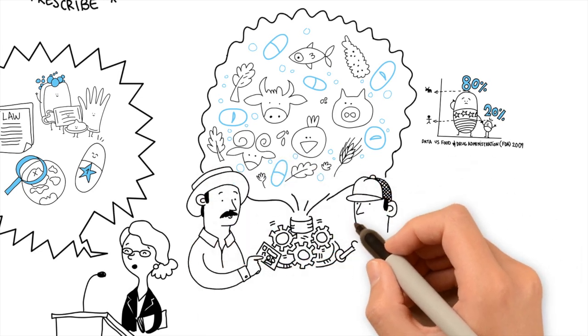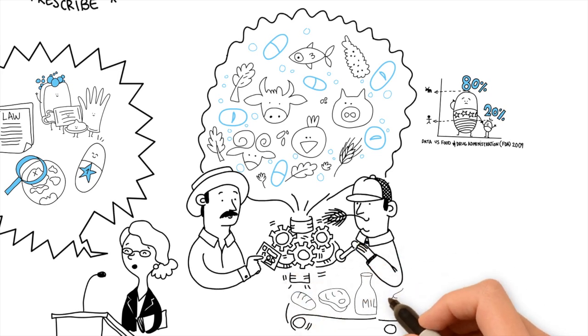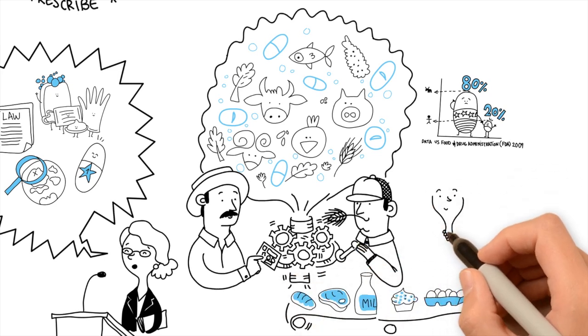In truth, urgent agricultural reforms are needed to curb practices that undermine the effectiveness of antimicrobial drugs, which are critical to human medicine.